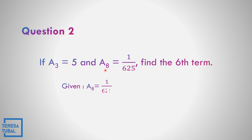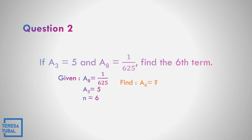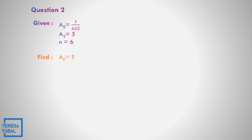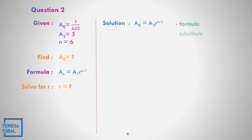Question number 2: if the third term is 5 and the eighth term is 1/625, find the sixth term. The eighth term is 1/625 and the third term is 5. The number of terms from the third up to the eighth is 6, so n equals 6. The formula used is a sub 8 equals a sub 3 times r raised to n minus 1, because we have no first term. Substituting: 1/625 equals 5 times r raised to 6 minus 1, which gives exponent 5.